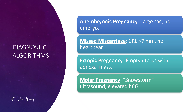Let's finish with a quick diagnostic algorithm recap. For anembryonic pregnancy, think large gestational sac with no embryo. For missed miscarriage, crown-rump length over 7 mm but no cardiac heartbeat. For ectopic pregnancy, empty uterus paired with an adnexal mass. For molar pregnancy, the classic snowstorm appearance on ultrasound with markedly elevated beta-HCG levels. Keep these patterns in mind and you will have the major early pregnancy complications at your fingertips.